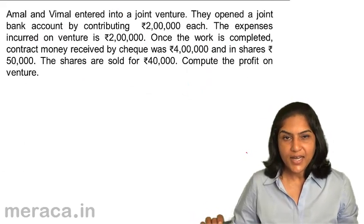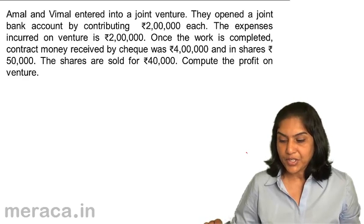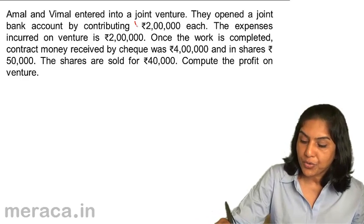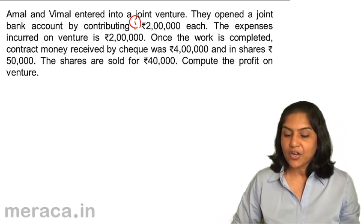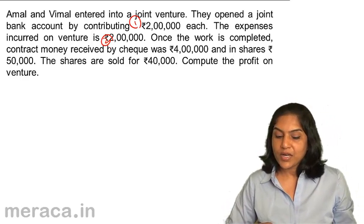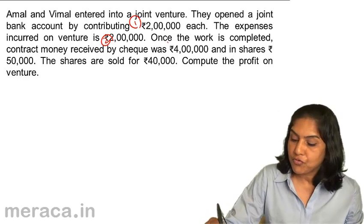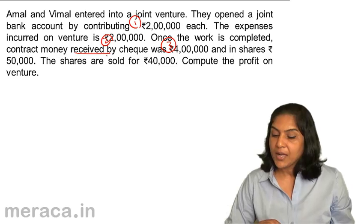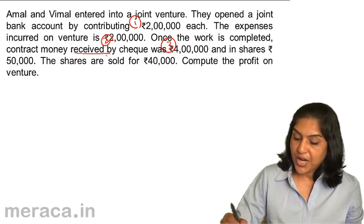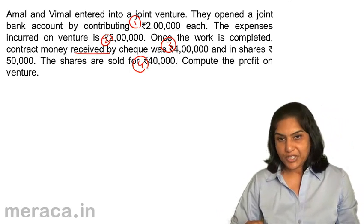Let us quickly discuss another problem. Amal and Vimal entered into a joint venture. They opened a joint bank account by contributing 2 lakh each. The expenses incurred on the venture are also 2 lakh. Once the work is completed, contract money received by check is 4 lakh, and in shares 50,000. The shares are sold for 40,000. Compute the profit on joint venture.